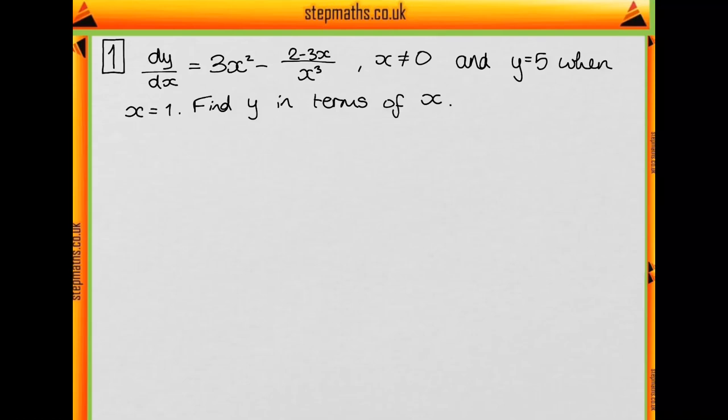This is question one and here we've got a differential equation. dy/dx equals 3x² minus (2 minus 3x)/x³. We're told x is not equal to 0 because otherwise we couldn't have this fraction because we'd have 0 on the bottom. And y equals 5 when x equals 1. And we want to find y in terms of x.